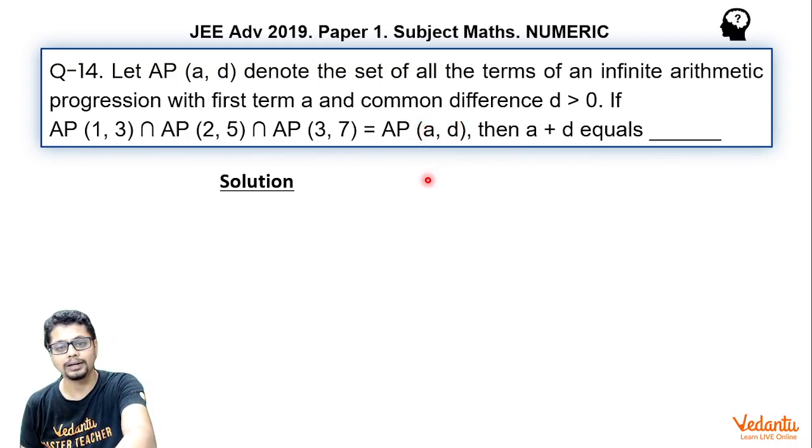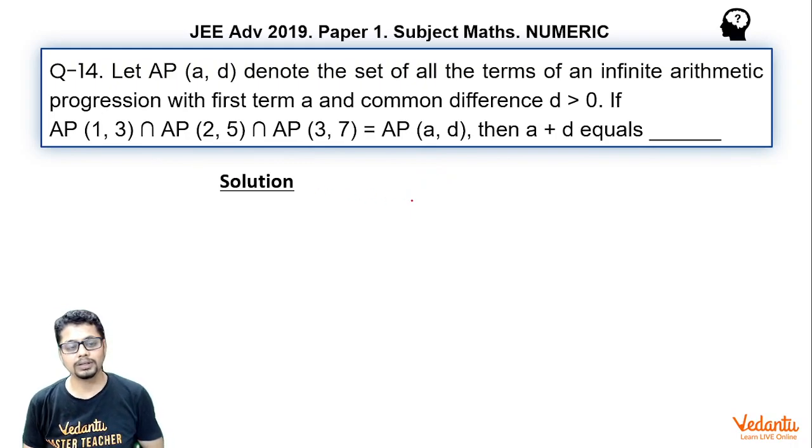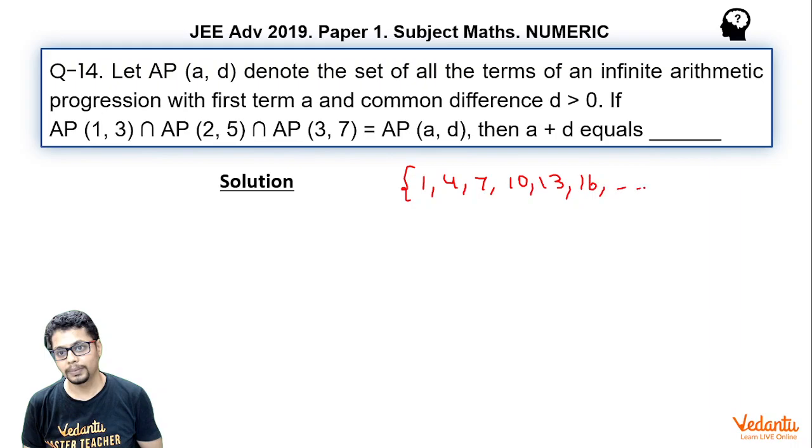What is this first AP? It is having first term 1 and common difference 3. So this essentially becomes this. What about the second sequence? It becomes 2, 7, 12, 17, 22, 27 so and so forth. What about the third sequence?